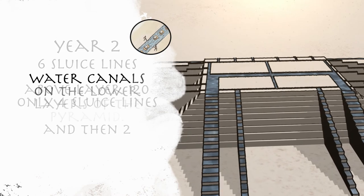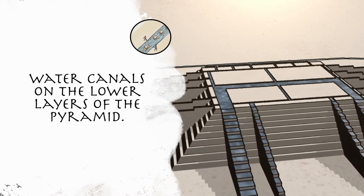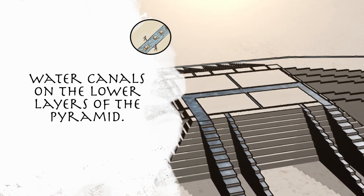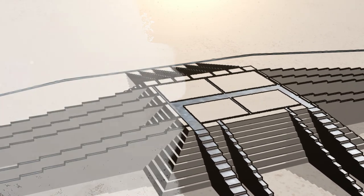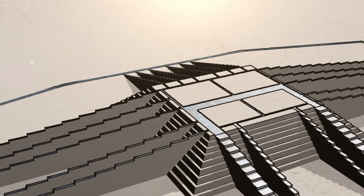There were water canals on the lower layers of the pyramid, up to the 120th layer, making it easier and faster to transport stones to the necessary locations. Due to limited space on layers above the 120th layer, the Egyptians rolled or slid stones from the sluices to the necessary location.